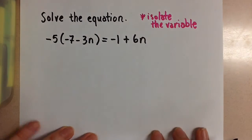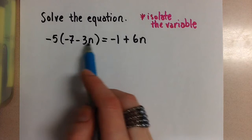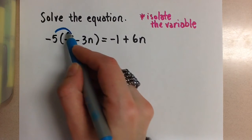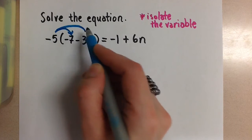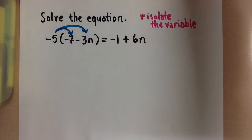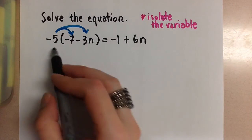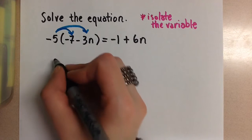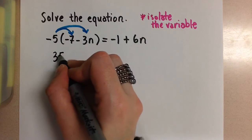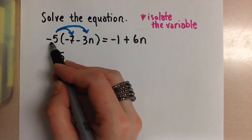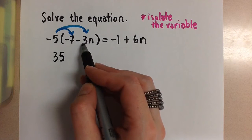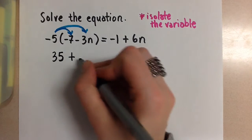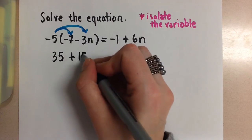To start off, we need to distribute because we want to get rid of these brackets. Distribute means we're going to take that negative 5 and multiply it with both terms inside of these brackets. So negative 5 times negative 7 gives us positive 35, then negative 5 times negative 3n is going to give us positive 15n.